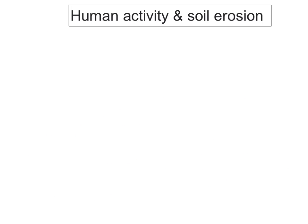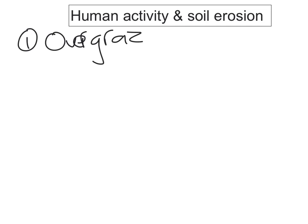The very last part you need to know is how human activity is causing soil erosion. Soil erosion means the wearing away of topsoil due to wind and rain. Human activity is making soil erosion worse. The first cause is overgrazing — grazing too many animals on an area of land removes all the vegetation, leaving the land bare and exposed to wind and rain where it can be easily eroded.